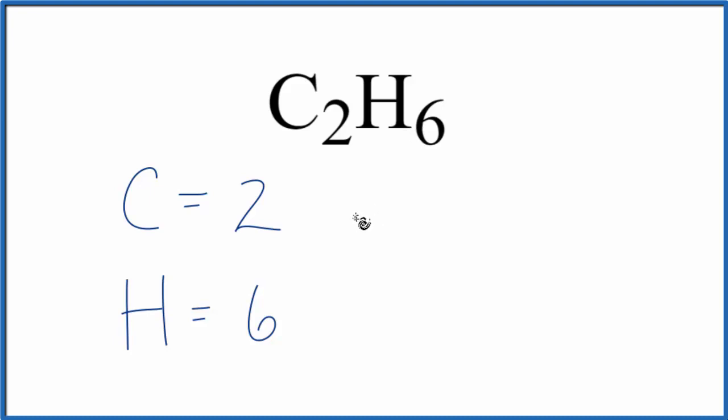Sometimes you're asked to find the number of carbon atoms in 1 mole of C2H6. To do that, you take the number of carbon atoms, the 2, and multiply that by Avogadro's number.